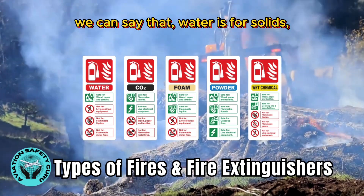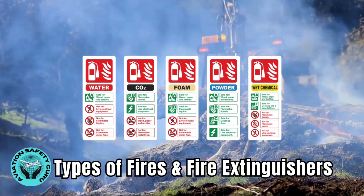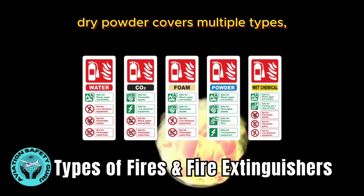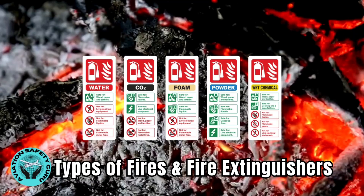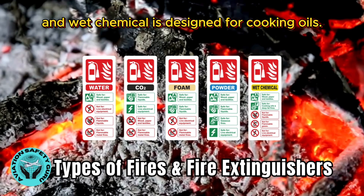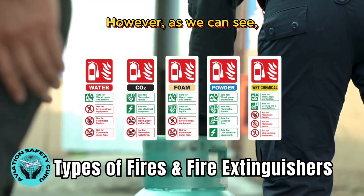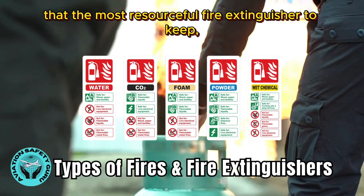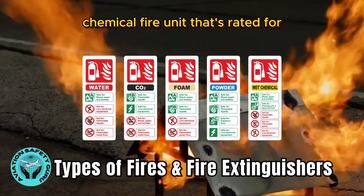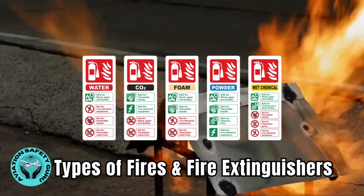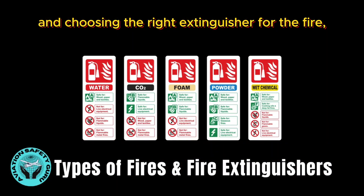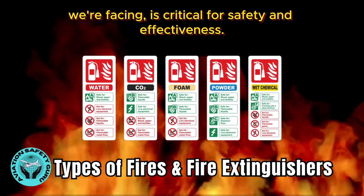To sum up: water is for solids, foam works on solids and liquids, dry powder covers multiple types including gases, CO2 is great for electrical and liquid fires, and wet chemical is designed for cooking oils. The most resourceful fire extinguisher to keep around the house is a dry chemical fire unit rated for A, B, and C fires. Remember, understanding the types of fire and choosing the right extinguisher for the fire you're facing is critical for safety and effectiveness.